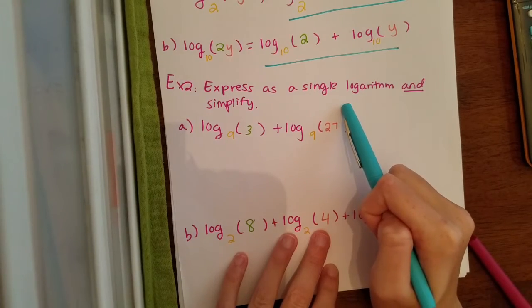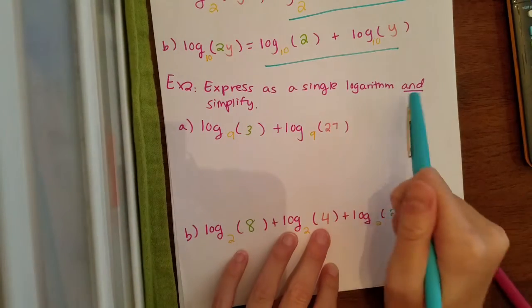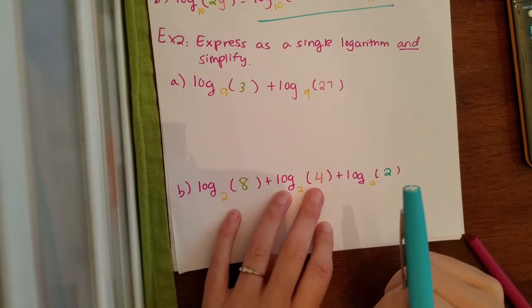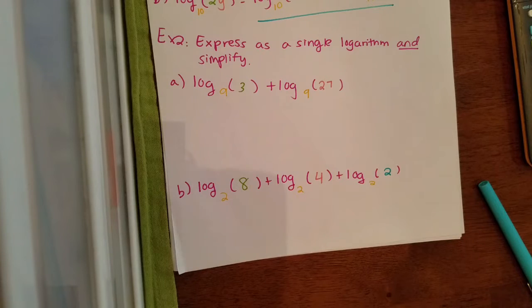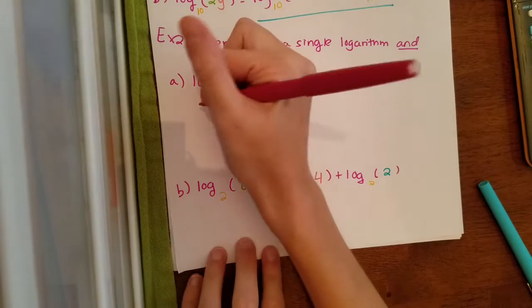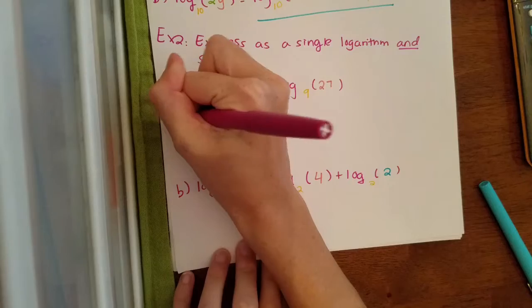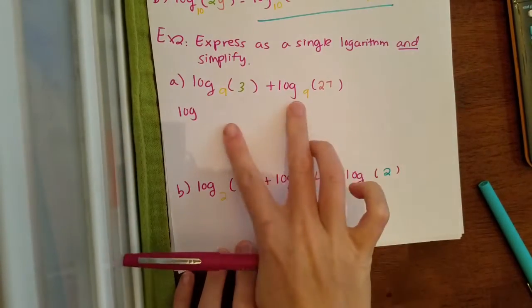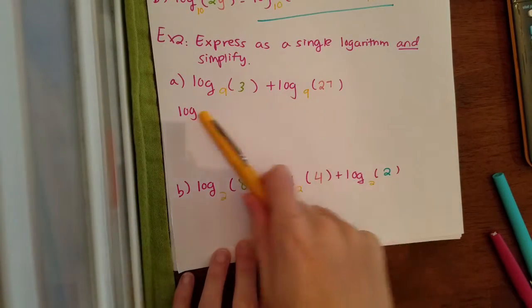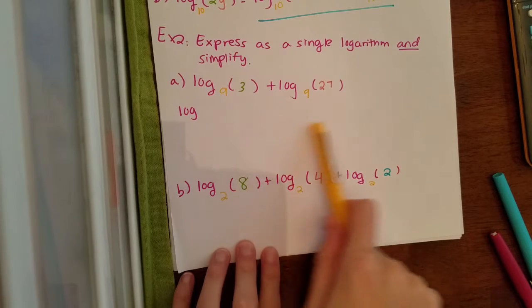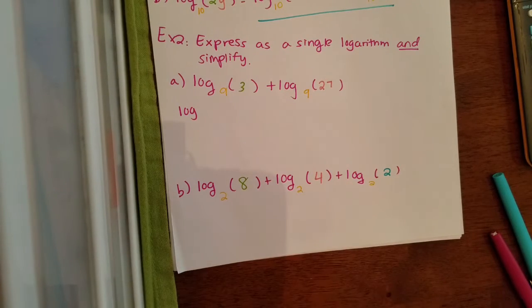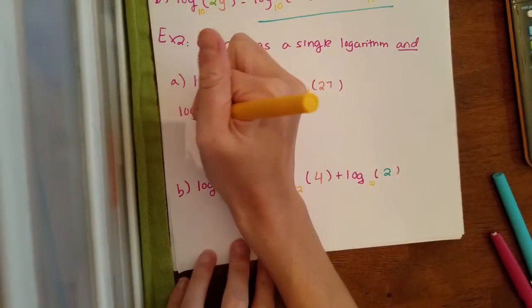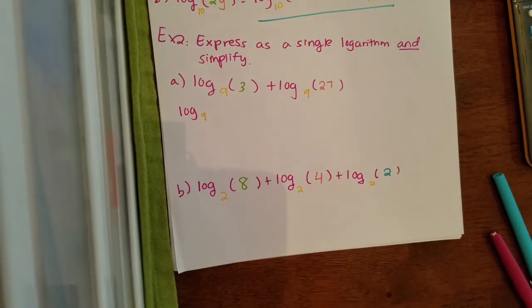We're going to reverse the process and express it as a single logarithm — that means putting it into one log — and we're going to simplify, which means we're actually going to solve for the log. Since we're expressing this as one logarithm, I'm only going to have one log. You can only do this if all the bases are the same. If the two bases were different numbers, you couldn't do it. So my nines are going to become my base.